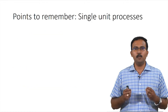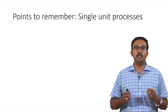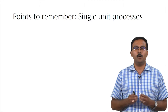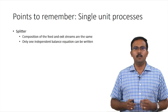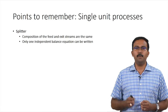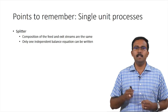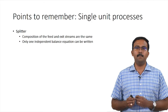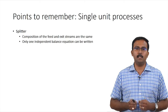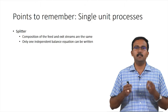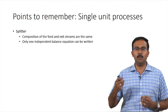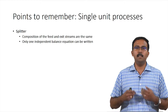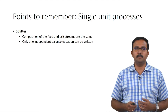When we talk about single unit processes, there are important points to remember. For a splitter, the composition of the feed and the exit streams are the same, which means only one independent balance equation can be written — either the total mass balance or one of the component balances, which would eventually simplify to the total mass balance.